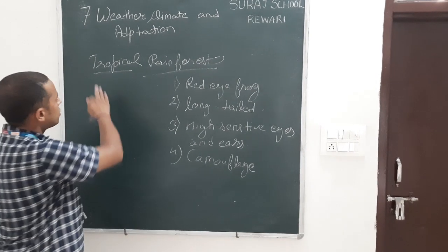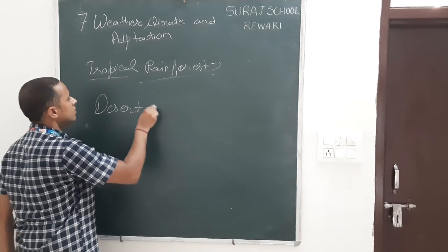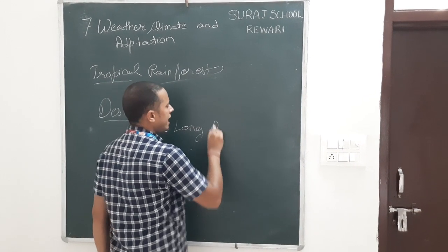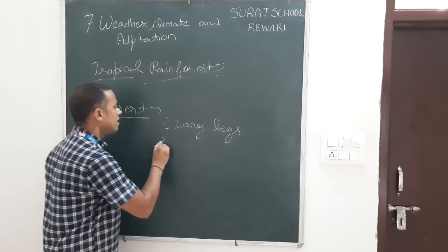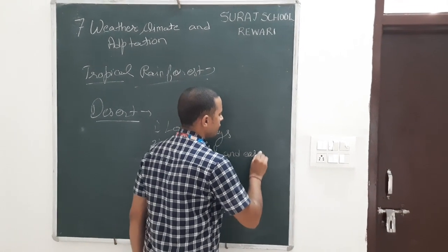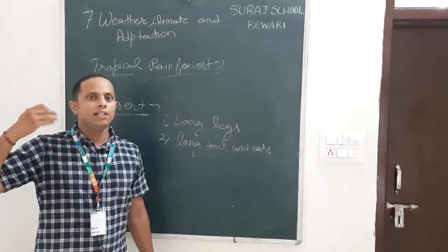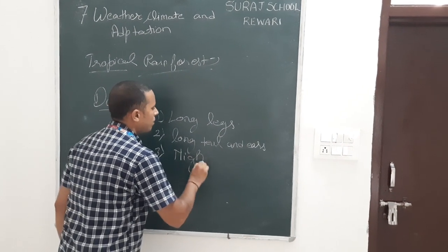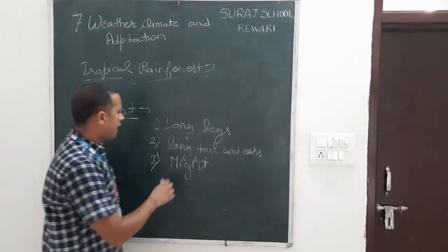Now we will discuss adaptation in the desert. In the desert, animals have long legs so that they get a high distance from the ground, which cools their body. Next, they have long tails and ears. The ears help them to cool down their body temperature — heat dissipates into the surrounding and cools down their body. They also come out normally at night: they sleep during the daytime and hunt during the night, which helps them adapt to the hot climate.